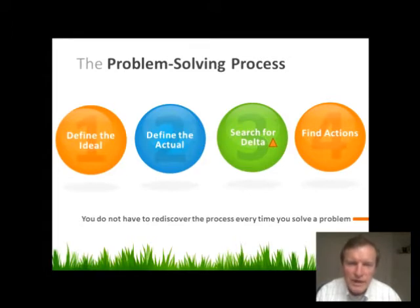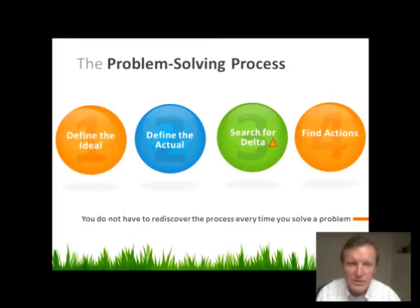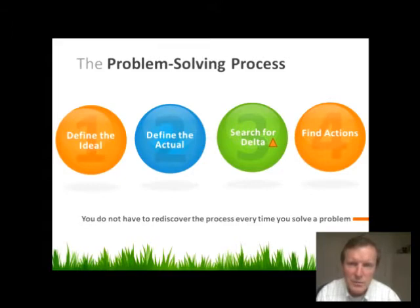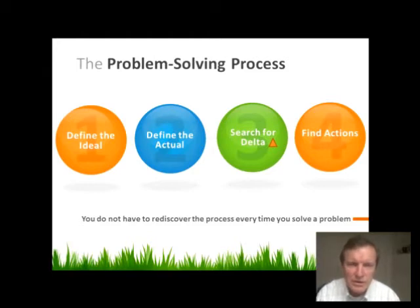The second step, we define the actual situation. In the programming world, this is usually the program we're working on or a program we've inherited from somebody else. The third step is to find the difference — isolate our attention to what's different between the actual program and what the requirements are asking us to do, instead of trying to focus on everything at once. In the fourth step, after we've narrowed it down to just what's changing, we try to find actions to eliminate the differences between the actual situation and the ideal.